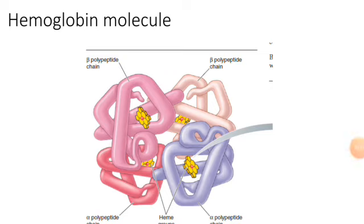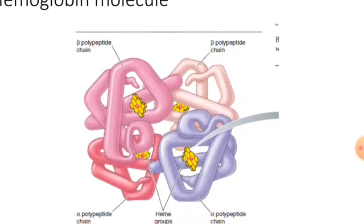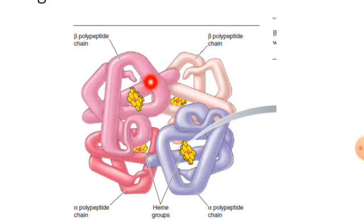We are talking about a very important subject, which is the oxygen-hemoglobin relationship and oxygen-hemoglobin dissociation curve. Let me remind you of the structure of hemoglobin: hemoglobin consists of four globin chains. Each globin chain is attached to a heme molecule, and in this heme molecule we have an iron ion which binds to oxygen reversibly.